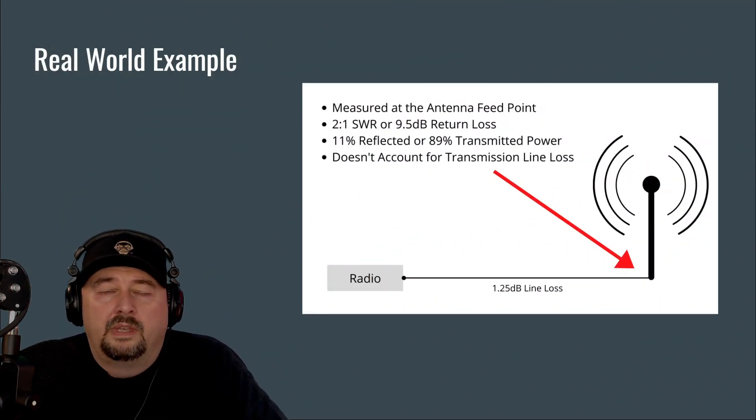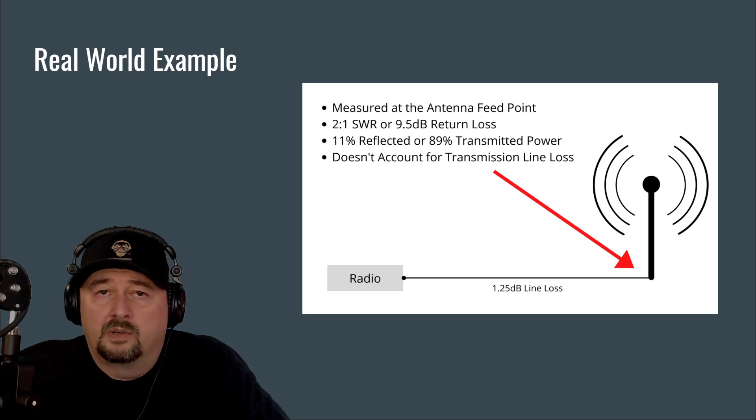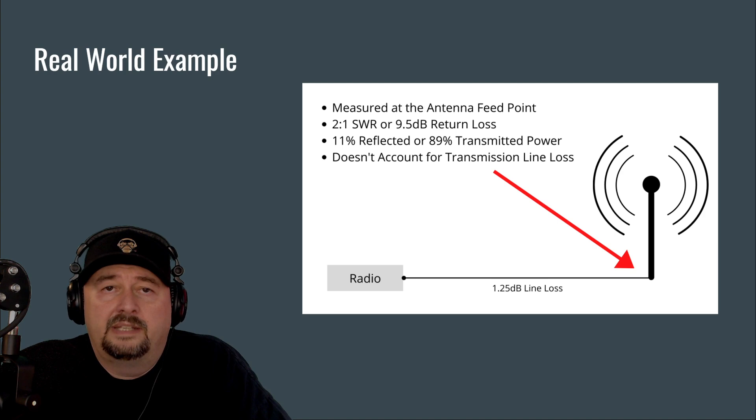Okay, so here's our real world example. In this diagram, we have a radio fed with some coaxial cable. In this particular instance, for the sake of this conversation, this coaxial cable has a 1.25 dB line loss. The red arrow depicts the feed point of the antenna, and that's where we're going to take some measurements. So when you measure at the feed point of the antenna, in this example, we have a 2 to 1 SWR, like we've been talking about earlier in the video, or a 9.5 dB return loss. We talked about this being 11% of our power reflected back into our transmission line at the antenna, with 89% of our power being transmitted. This does not account for transmission line loss.